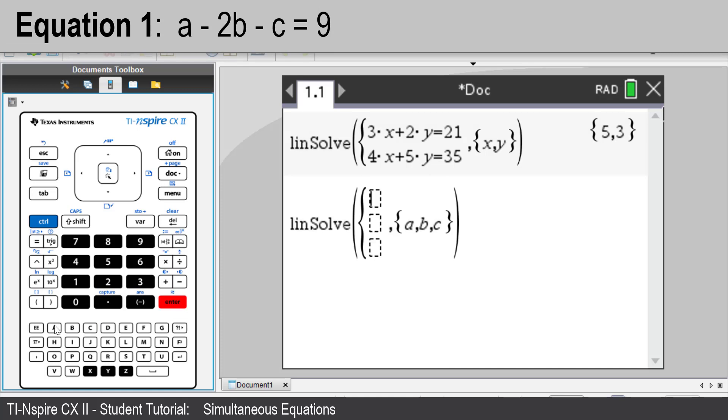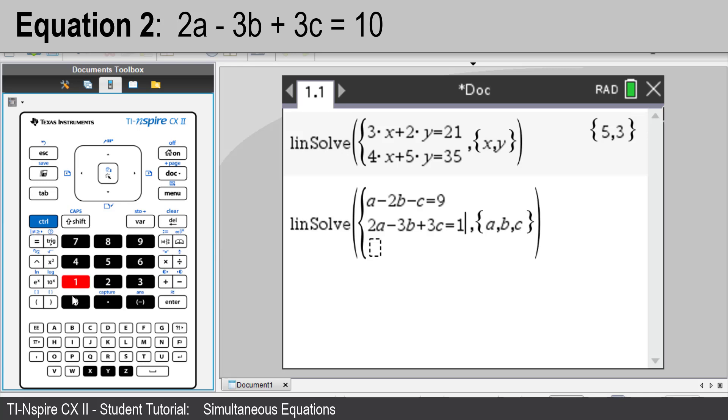The first equation is A subtract 2B subtract C equals 9. Press the down arrow to move to the next field and enter the second equation: 2A subtract 3B add 3C equals 10. Press tab to move to the next field and enter the third equation: 3A subtract C is equal to 4.